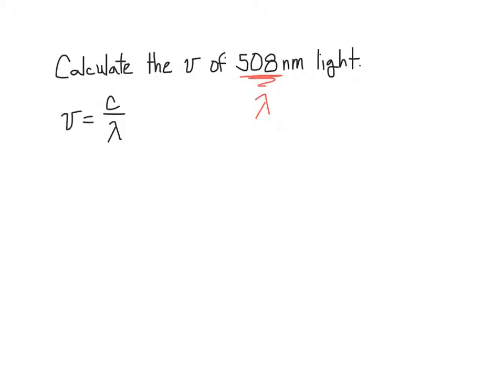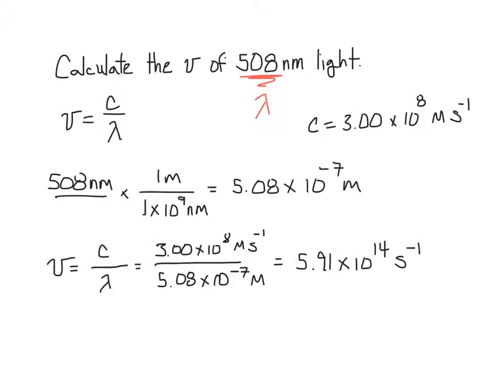We need to do some unit conversions because the speed of light is given as 3 times 10 to the 8th meters per second. So we should convert the nanometers to meters and then plug it into the equation. Our final answer is 5.91 times 10 to the 14th per second, or per second is actually equal to hertz. So we'd say 5.91 times 10 to the 14th hertz.